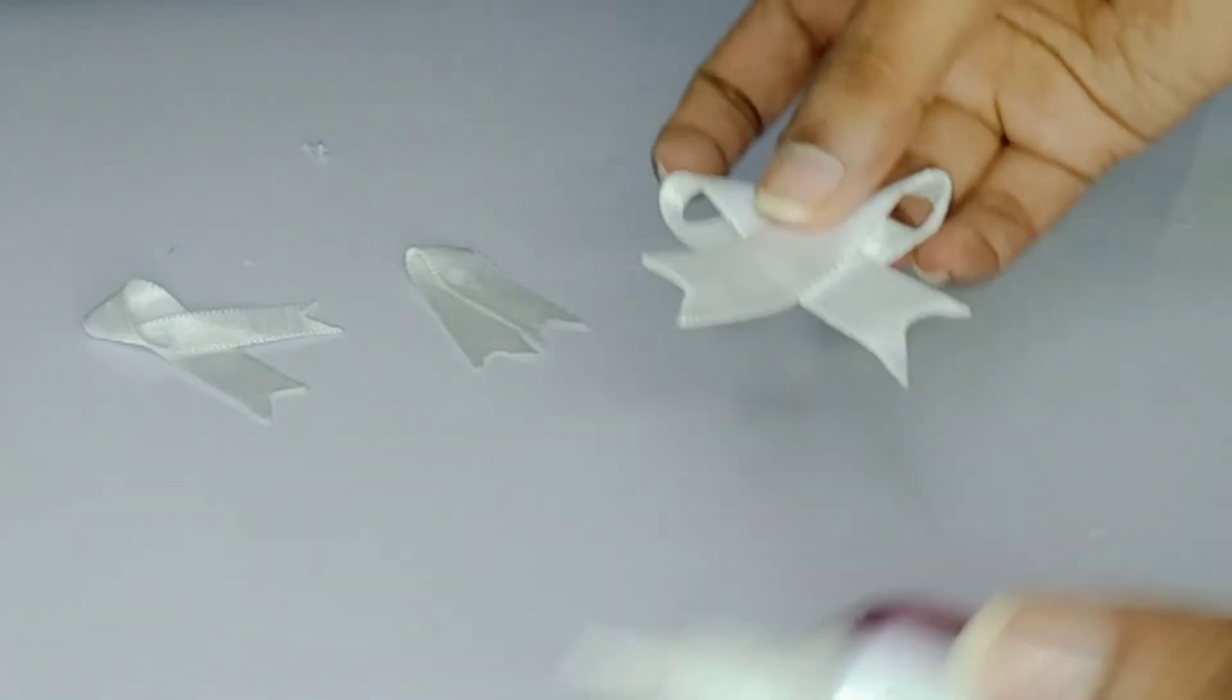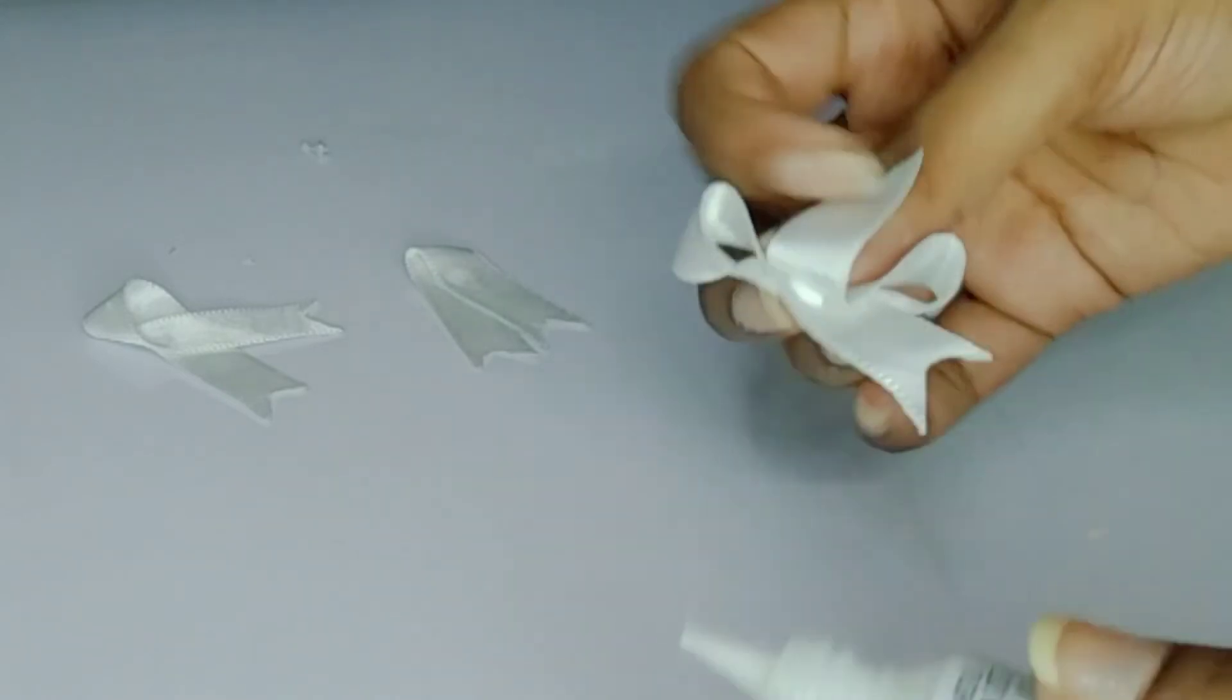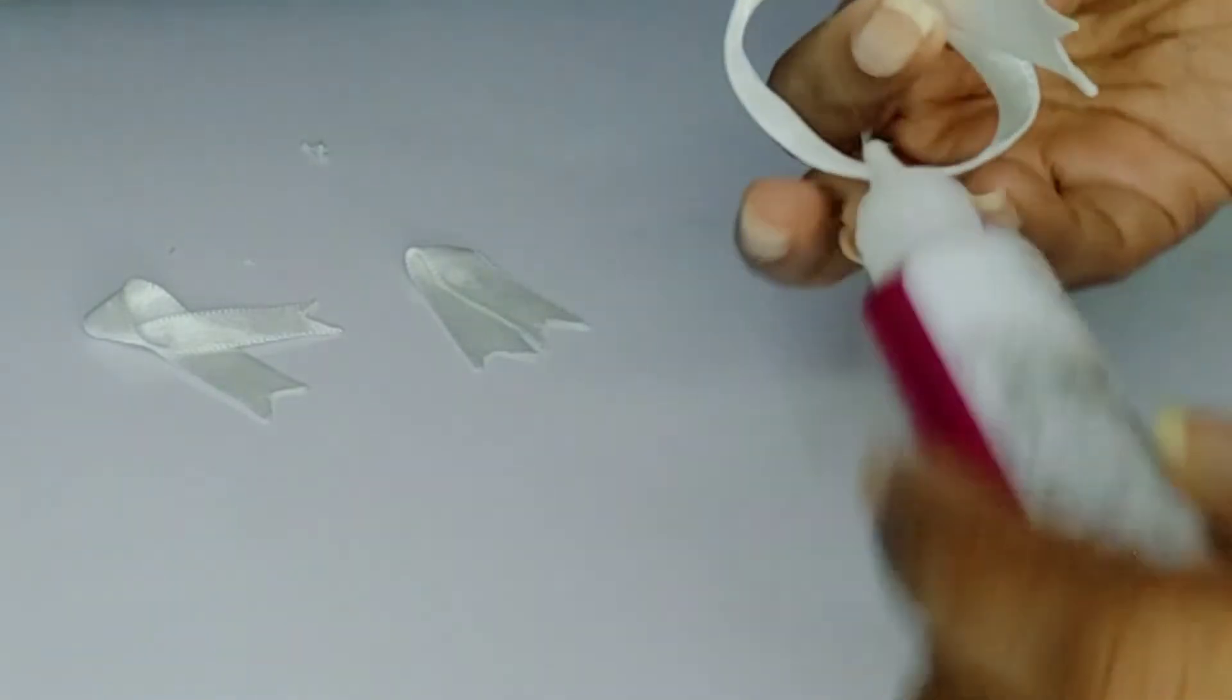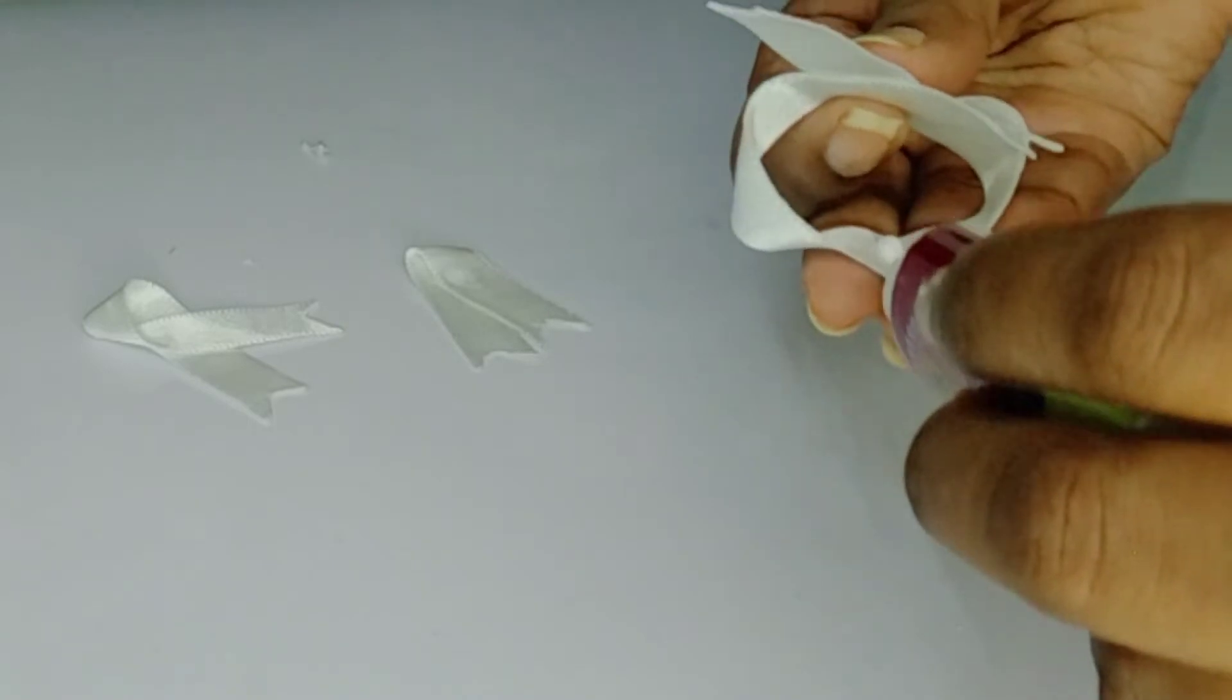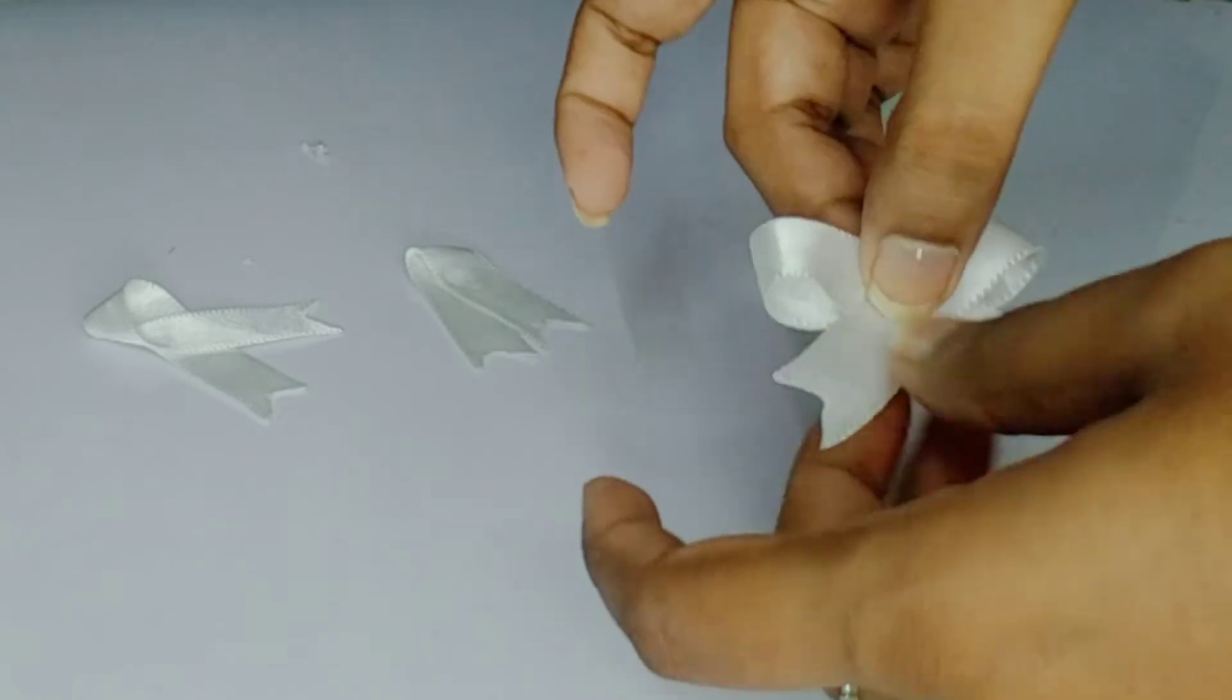Now we fold it and glue it. First, we will paste the two sides. Then we will glue it in the center and paste it. Then we will completely dry.